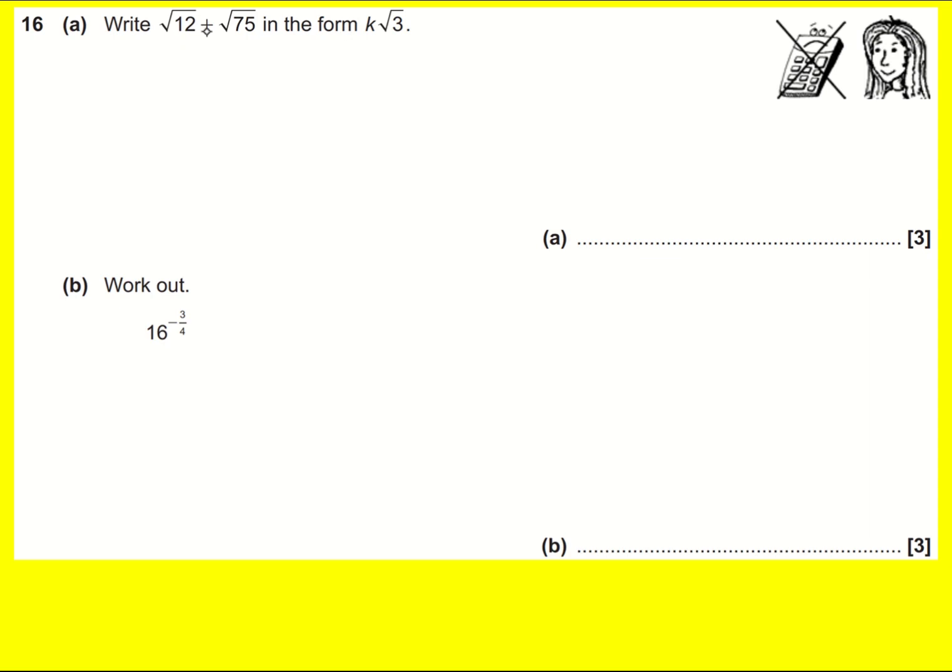Here we have a surds question that wants us to write √12 + √75 in the form k√3. So that's kind of indicating that you need to write a 3 in both of √12 and √75.